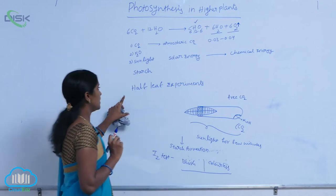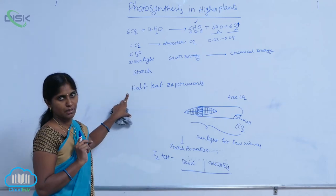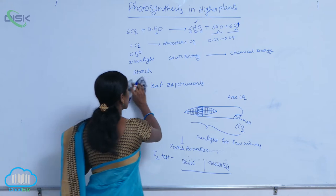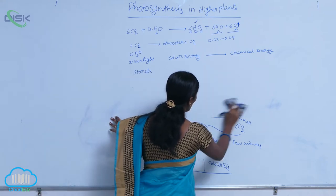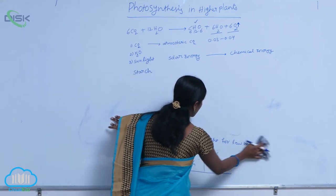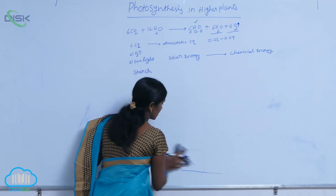This is the half leaf experiment. Another experiment is: what is the end product of photosynthesis? Starch.